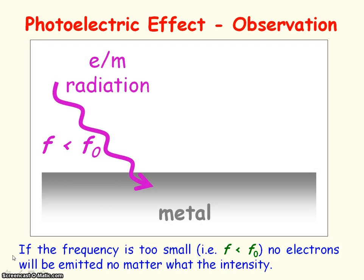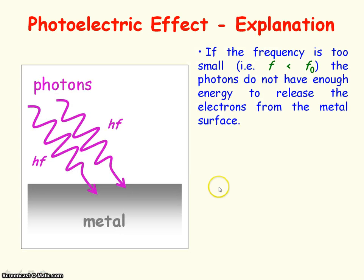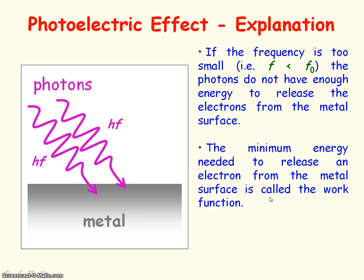What was observed is that if the frequency of the electromagnetic radiation was less than the threshold frequency f₀, then no electrons were emitted — and it didn't matter what the intensity of the radiation was. So you could have very high intensity electromagnetic radiation, but if the frequency was too low, no electrons were emitted. This is because if the frequency was too low, the photons would not have enough energy to release the electrons from the metal surface.